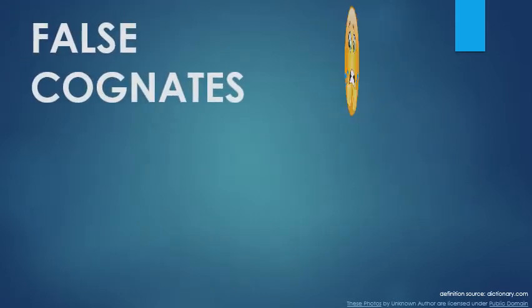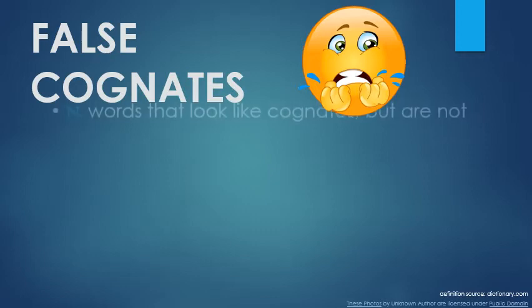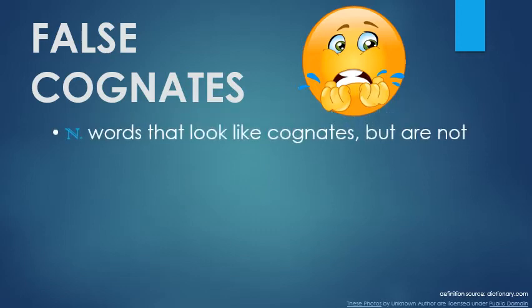False cognates, on the other hand, are anything but your friends. They are double agents who appear to be working for one side when, in fact, their loyalties lie elsewhere. In other words, these are sets of words that look the same but have completely different meanings. This may be because they actually come from different roots and just look similar by coincidence.